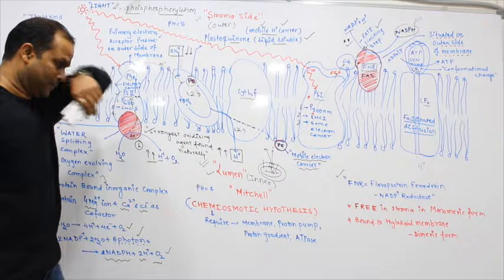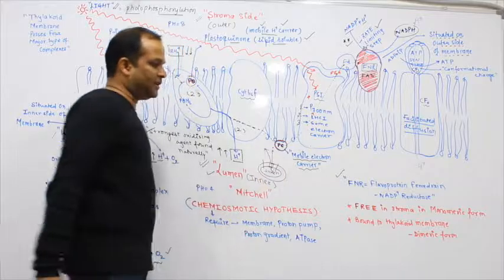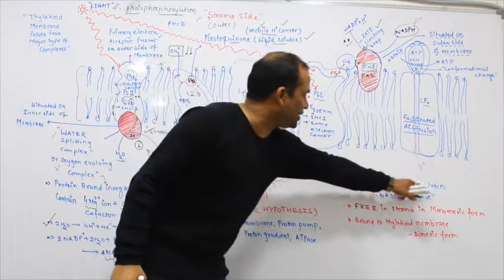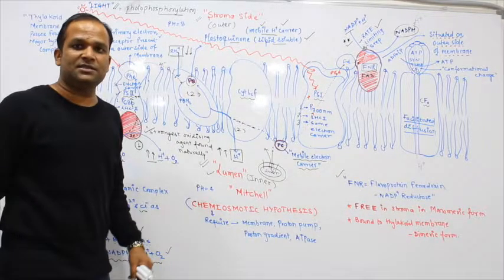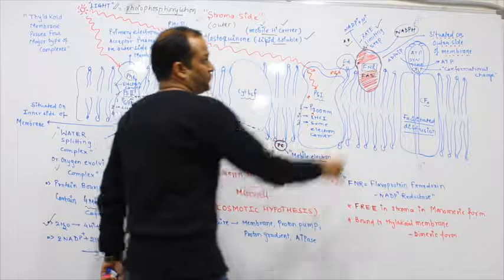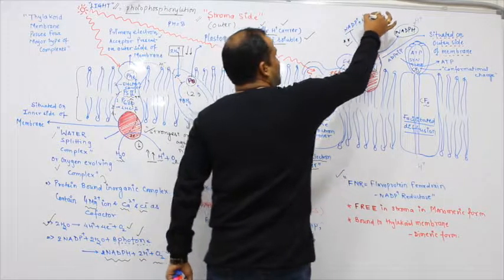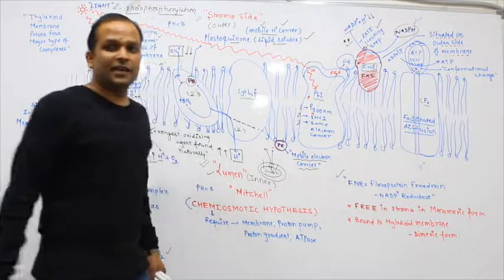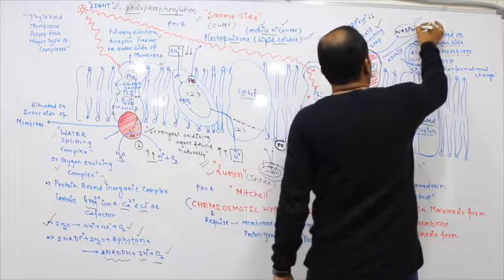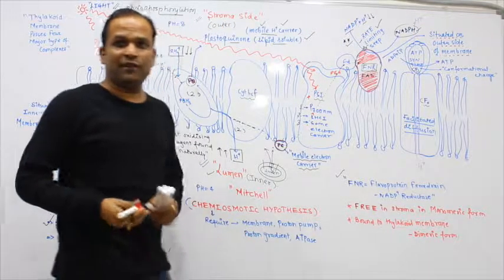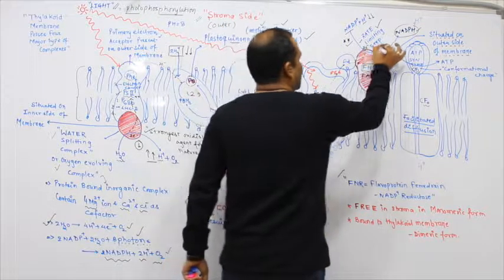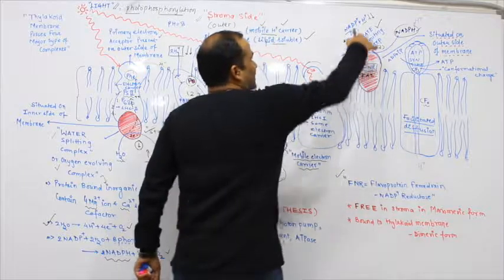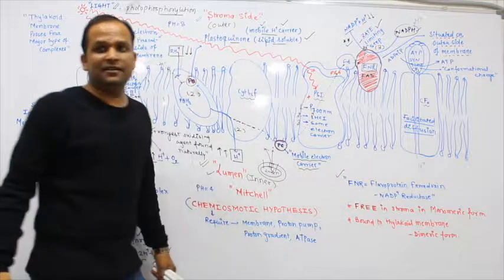The third reaction: when electrons finally reach the FNR, also known as ferredoxin-NADP+ reductase, this accepts H+ ion from stroma side, converting it to NADPH. In this third reaction, the H+ ion on stroma side decreases.